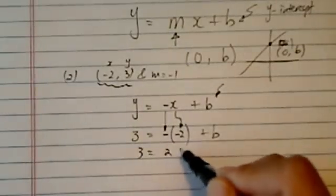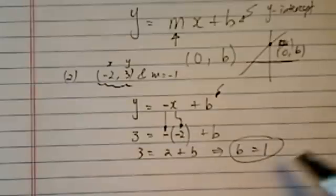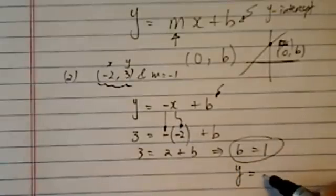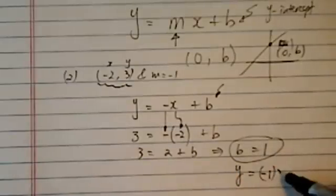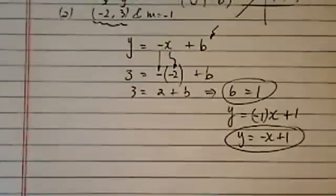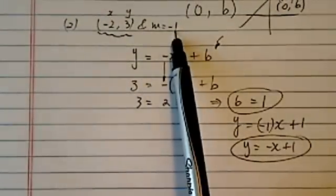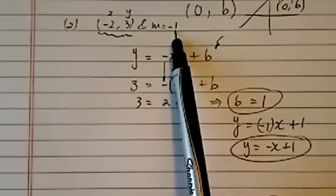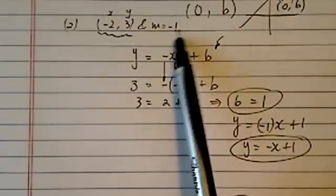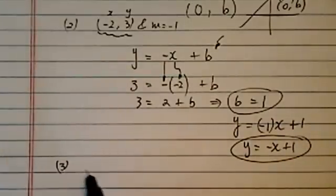And then 3 is equal to 2 plus b, that's the easy one, b equals 1. Once we find that, then the slope is -1 times x plus 1, or -x + 1. Okay, so that's the equation. This type of problem, you really need to find m. Either they're giving you two points or they just give you m blank out. Let's go on to three.